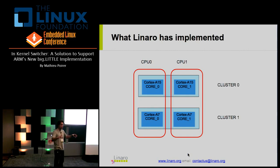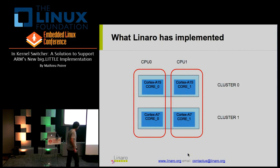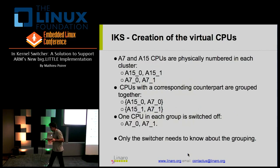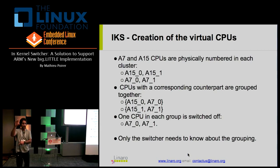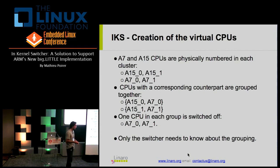All virtual CPUs are independent and can use whichever physical core within the virtual cluster they want. There's no rocket science to how CPUs are grouped — the switcher logic takes the sequential number of each CPU in the cluster and couples them together. In the TC2 implementation we have a third A7 core that has no counterpart in the A15 cluster, so it is simply turned off. To maximize hardware utilization with IKS, you should have the same number of cores in both clusters; otherwise, unmatched cores are switched off.